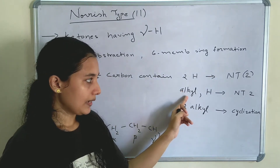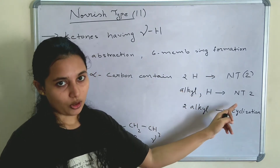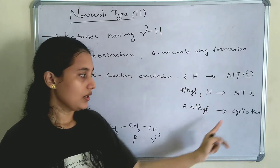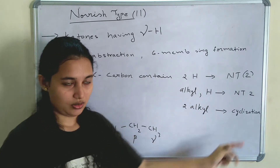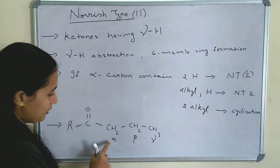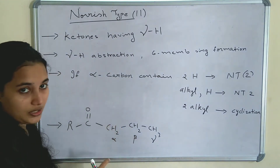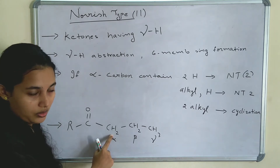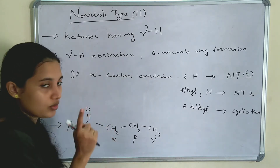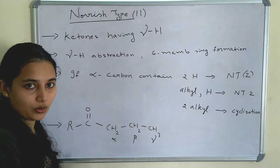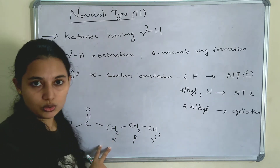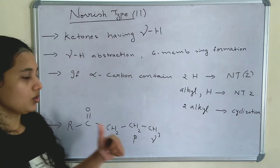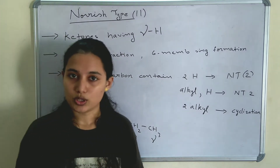If the alpha carbon contains one alkyl and one hydrogen, it will give Norrish type 2 reaction. And if it contains 2 alkyl groups, it will give cyclization. This alpha carbon contains 2 hydrogens, so this will give Norrish type 2 reaction. If it contains 2 alkyl groups instead of 2 hydrogens, then it will go through cyclization instead of Norrish reactions.